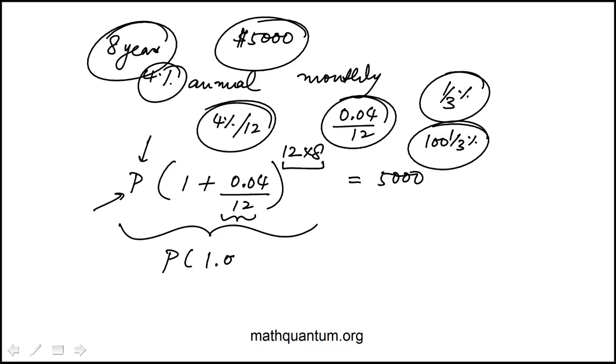1.003333, this number to the power 96. Use the calculator to compute that. Let me actually do it here. So 1.04 divided by 12 plus 1, so it's 1.00333 to the power of 96. That turns out to be 1.3764.